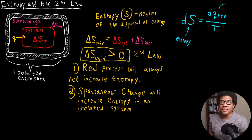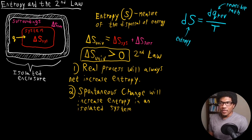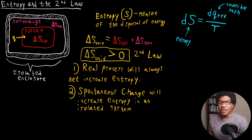This is the heat for a reversible path — this is specifically for a reversible path. This just gives us a general overview of what entropy is and how it gels with the second law of thermodynamics.